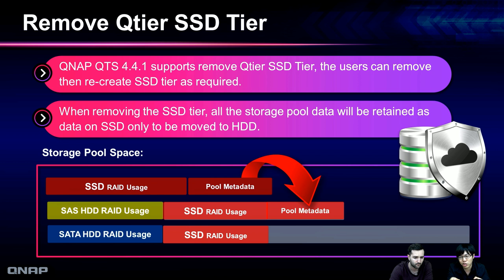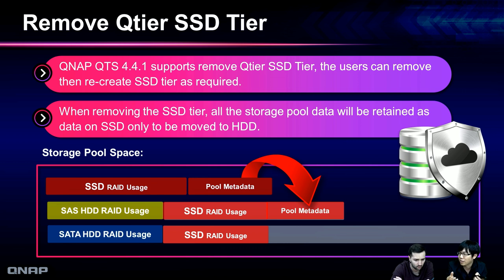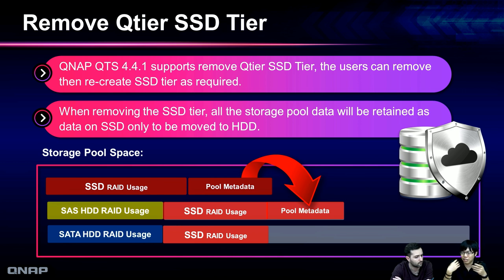Here's how we do this feature. After a few button clicks, the system migrates the data from the SSD tier to the SAS or SATA tier. We also migrate the pool metadata — which is used to show how the pool and SSD should operate — to the SAS or SATA tier. If there is a SAS tier, it will be primarily located there. The key point is that we keep the data after the SSD tier has been removed, so users don't need to worry about data loss. Using this remove QTier SSD tier function, they can remove the SSDs and add them back later, with the pool metadata and SSD data moved back to the SSD tier.